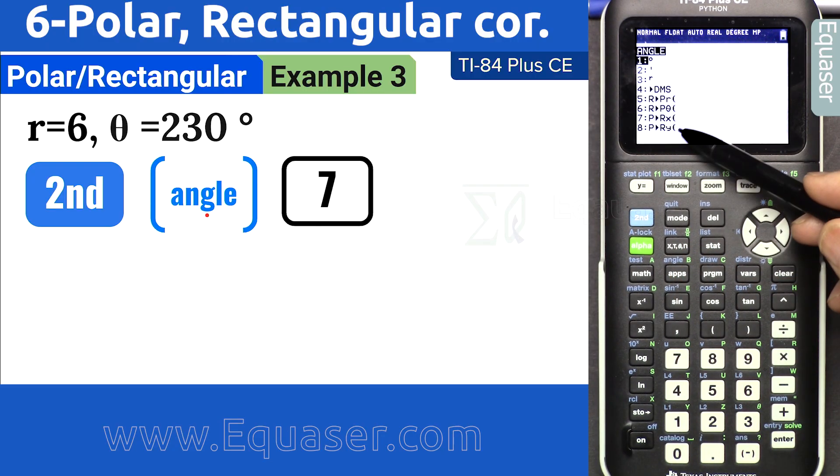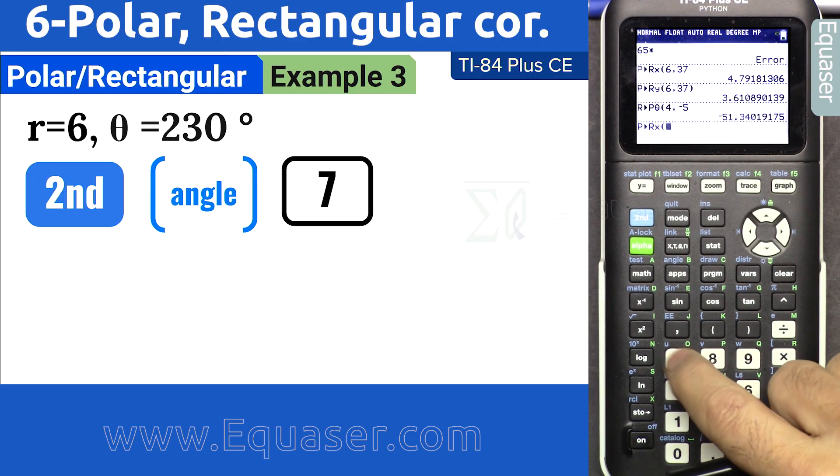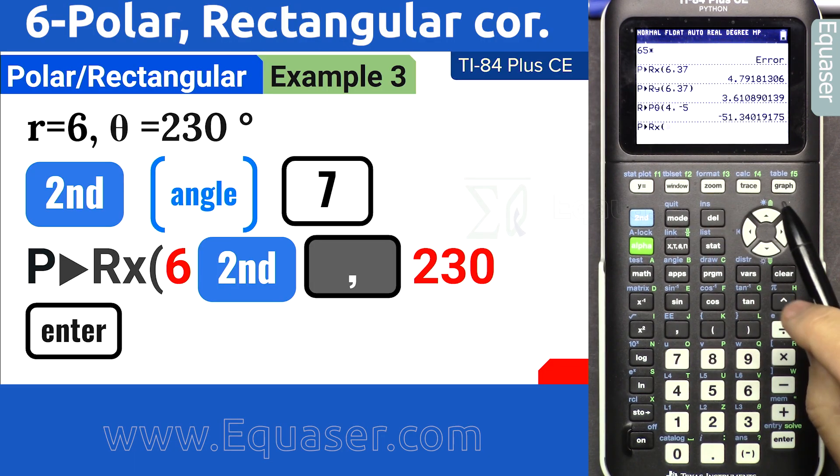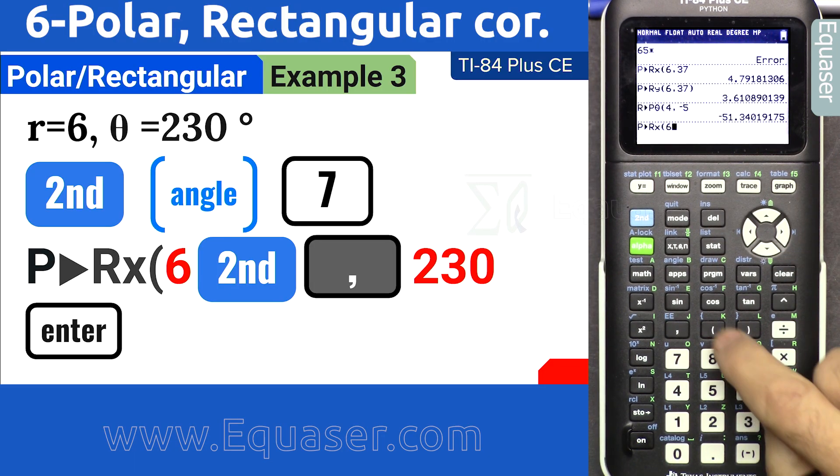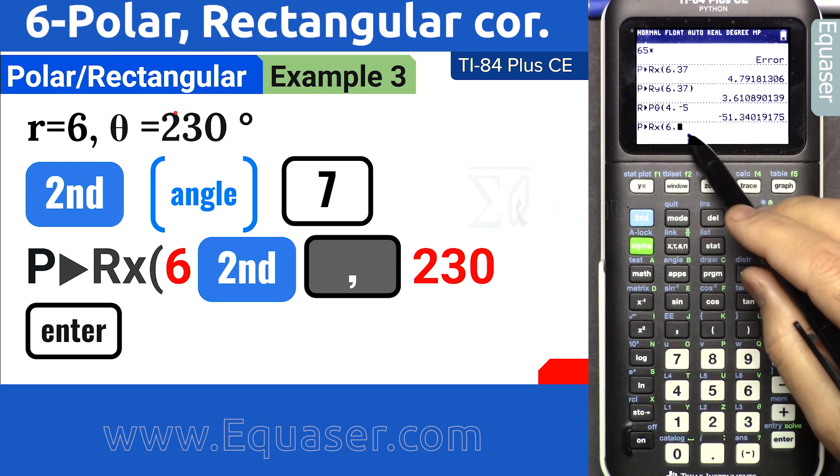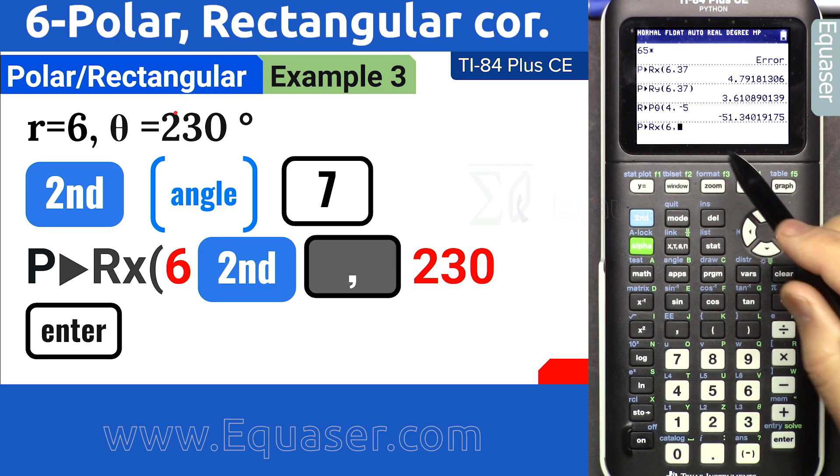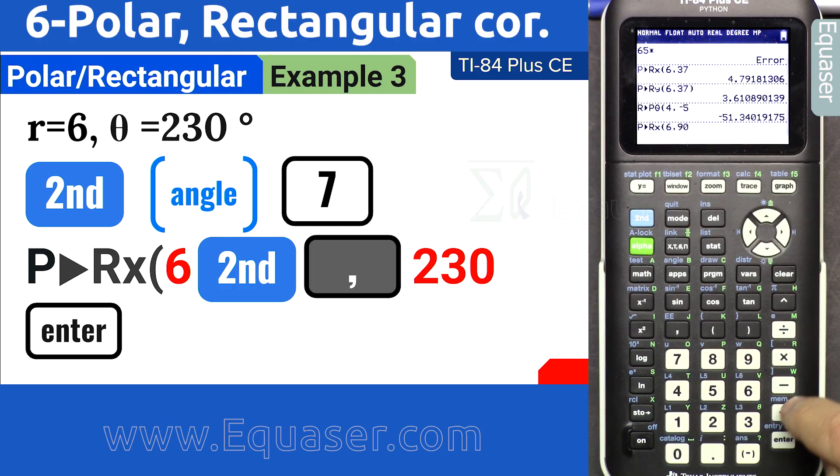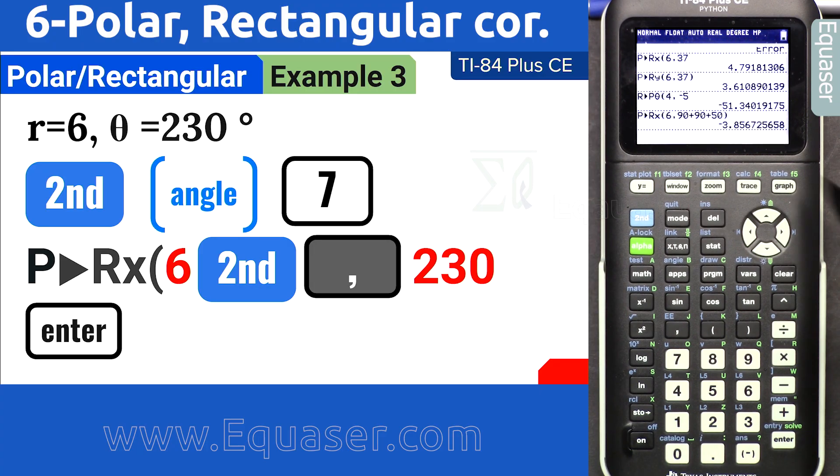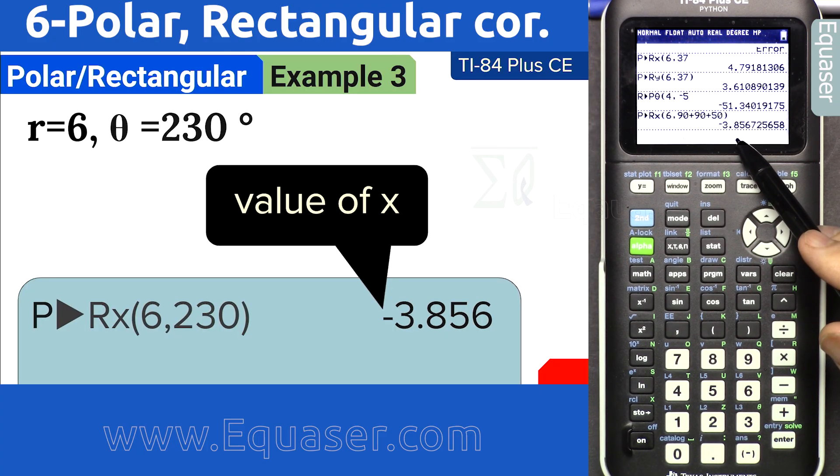Second function angle, 7. We want x first, and r is 6 comma, and our theta is 230. Here we can enter the expression. Remember, it was 90 plus 90 plus 50. We could do that, and we got x minus 3.85.